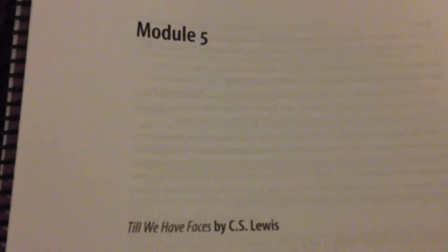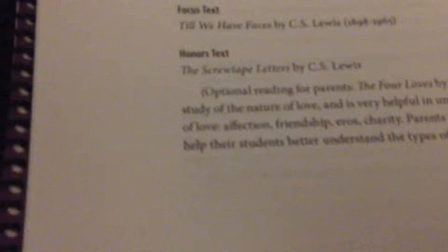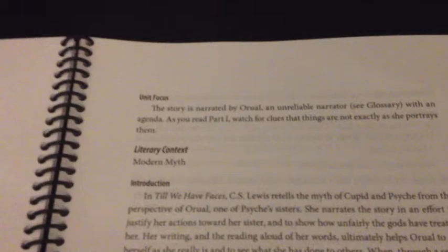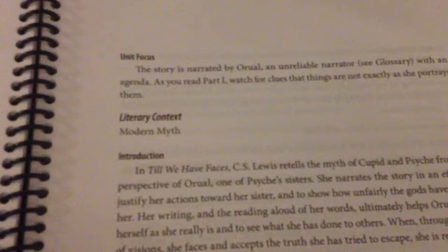The next thing we're going to look at is one of the modules. This is module five, and the focus text is Till We Have Faces by C.S. Lewis. We study full-length classics in virtually every module, with a few exceptions explained in the text. The honors text is referenced just below the focus text, and there's also a suggested optional reading for parents. The entire curriculum is intended to be self-directed, because many parents approach classic literature the same way I approach calculus — not knowing where to begin. So I try to be the teacher for you.